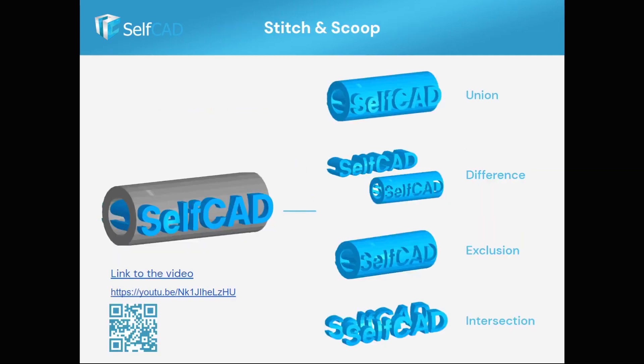One of the most elementary ways of modeling is using Boolean tools. In Tinkercad, you can only have two options. In SelfCAD, it's called Stitch and Scoop, and as you can see, SelfCAD has all four options.